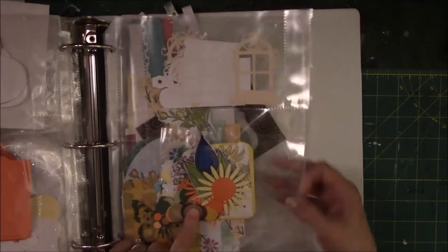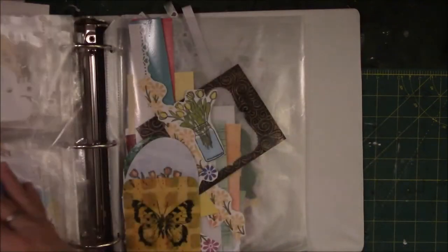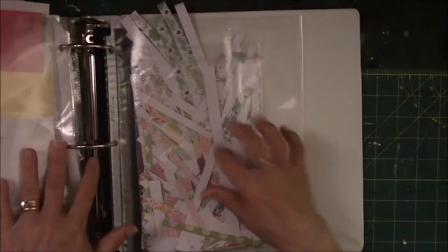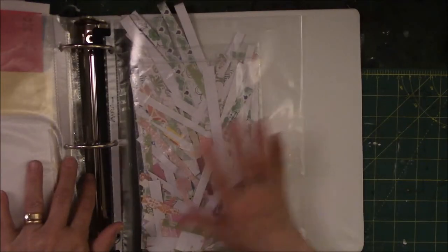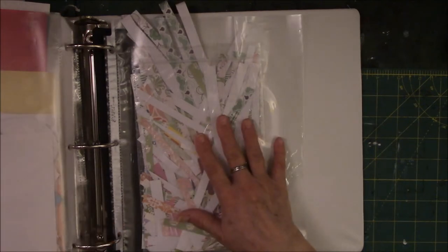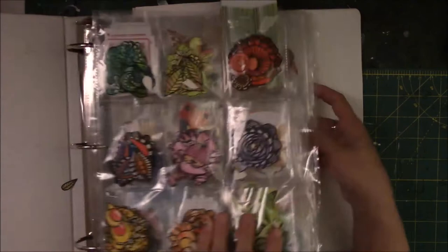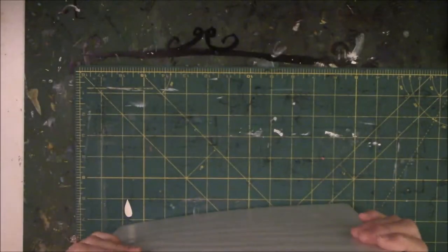These are flower parts, window seals, windows. These are just miscellaneous items that I put into sheet protectors. And these are strips of scrapbook paper that need to be glued onto some kind of a surface. So that's those.